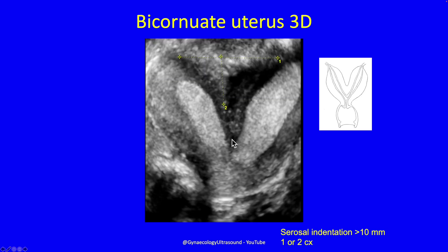In a bicornuate uterus, you've now got a myometrial dip of more than 10 millimetres. They're actually pretty uncommon — I don't see them very often at all. And you can have one cervix or two cervices.